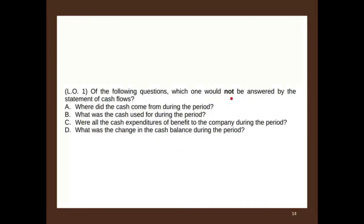Of the following questions, which would NOT be answered by the statement of cash flow? A: where did the cash come from during the period? Yes, that's one purpose. B: what was the cash used during the period? Yes, it tells you how cash is coming in and being spent. D: what was the change in the cash balance? Sure — it shows the beginning and ending balance. That leaves C: were all cash expenditures of benefit to the company? The cash flow statement doesn't tell you if expenditures benefited the company or not. The answer is C.